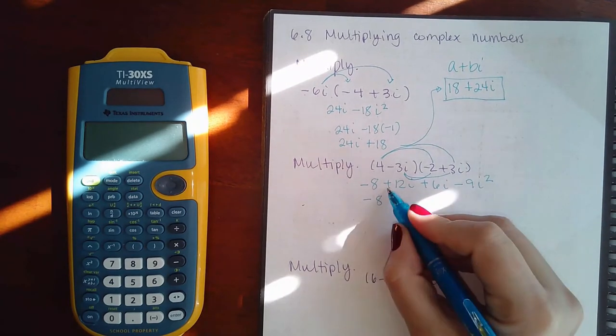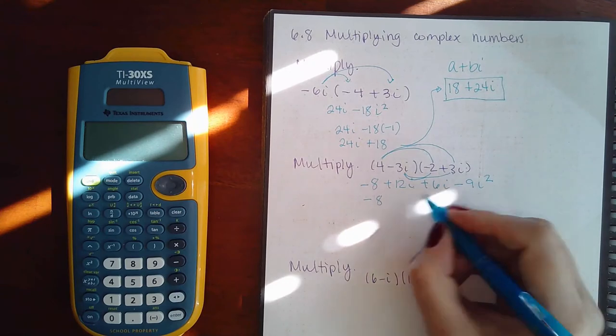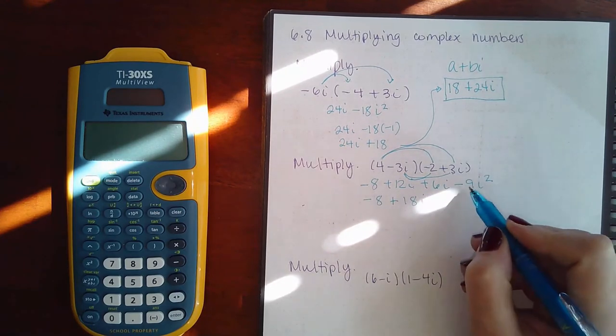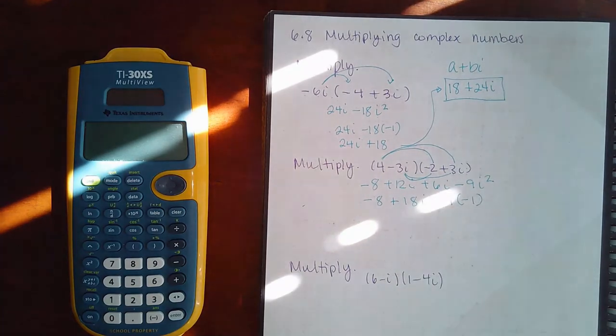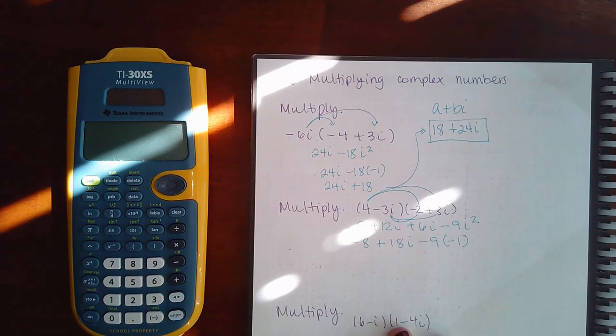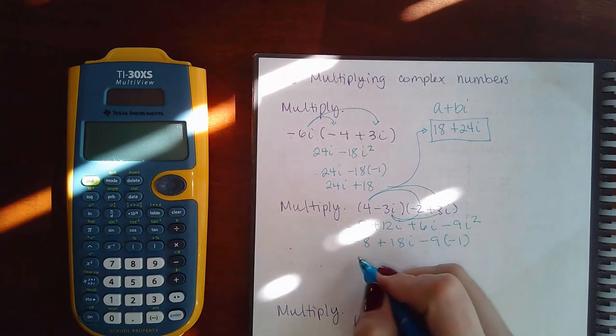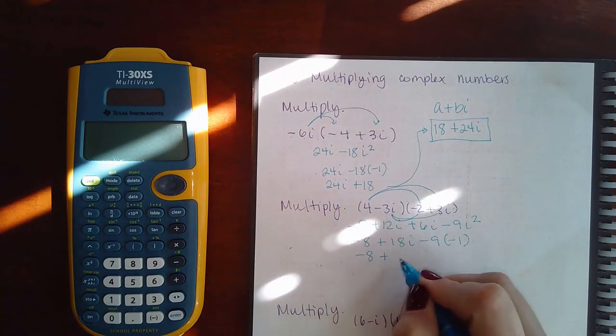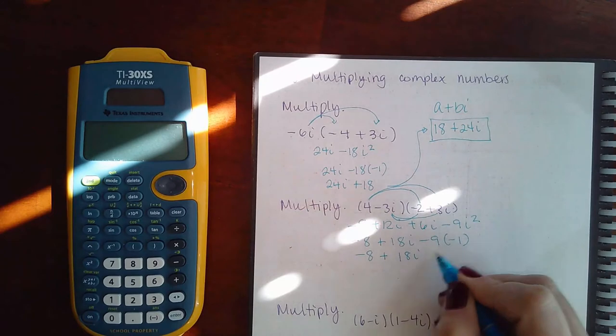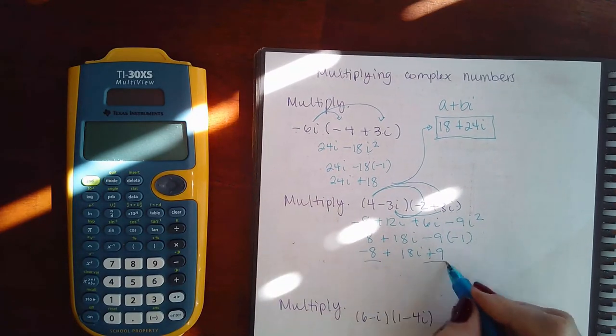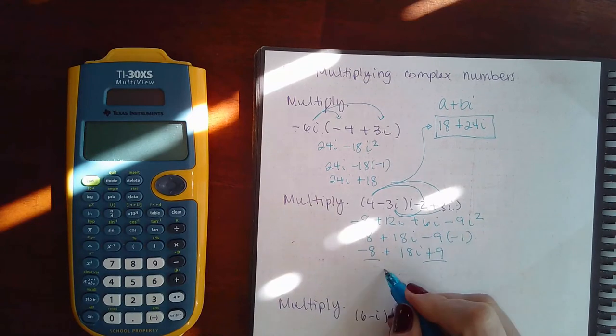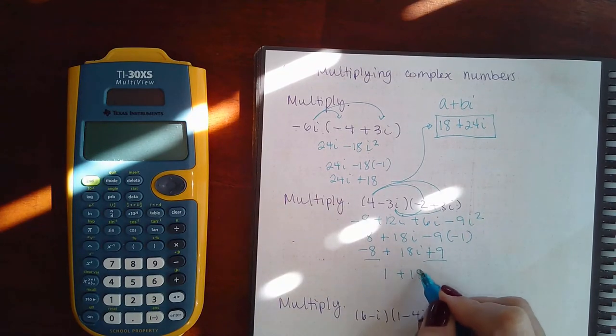I have positive 12i and positive 6i which make positive 18i. And then here I have negative 9 times a negative 1 because i squared is negative 1, which means I have negative 8 plus 18i and that becomes a positive 9. So if I combine the real numbers together I get a positive 1 and then a positive 18i.